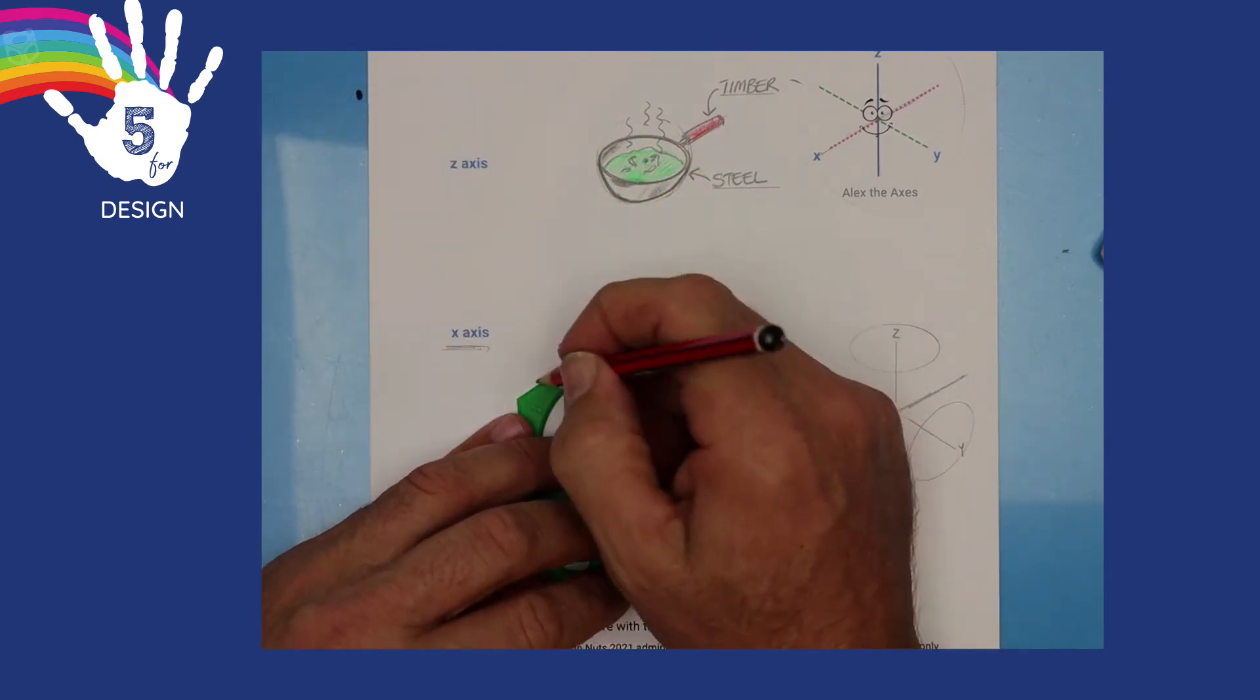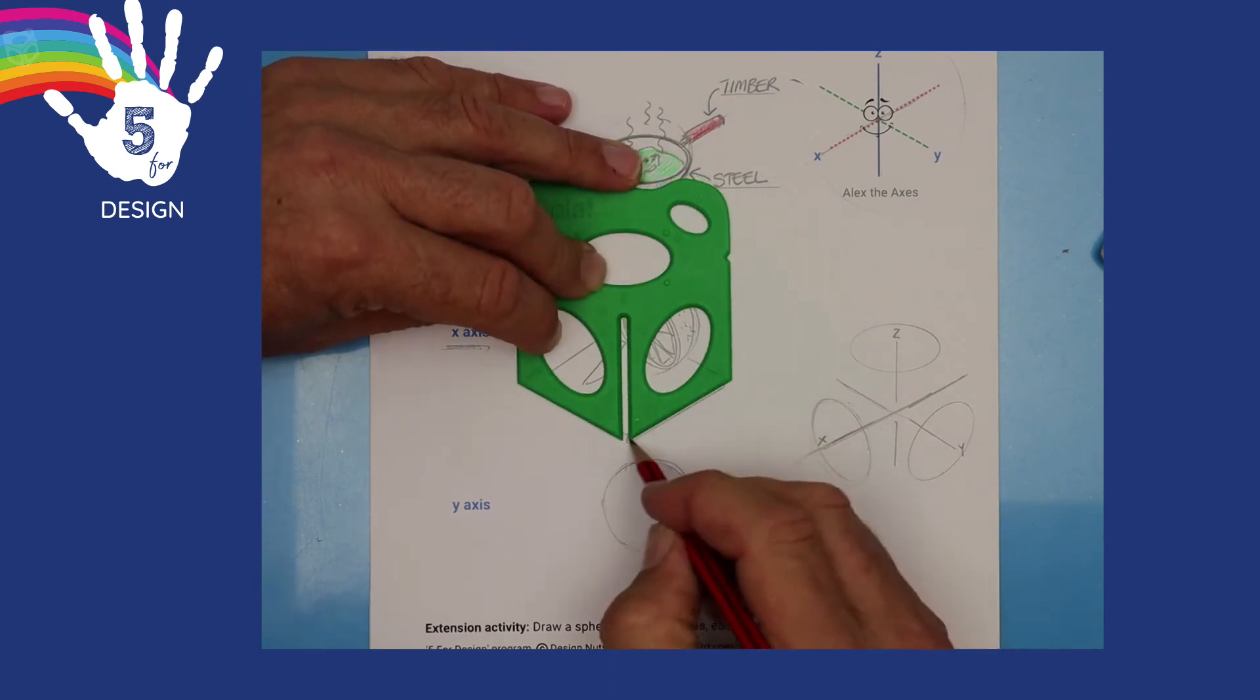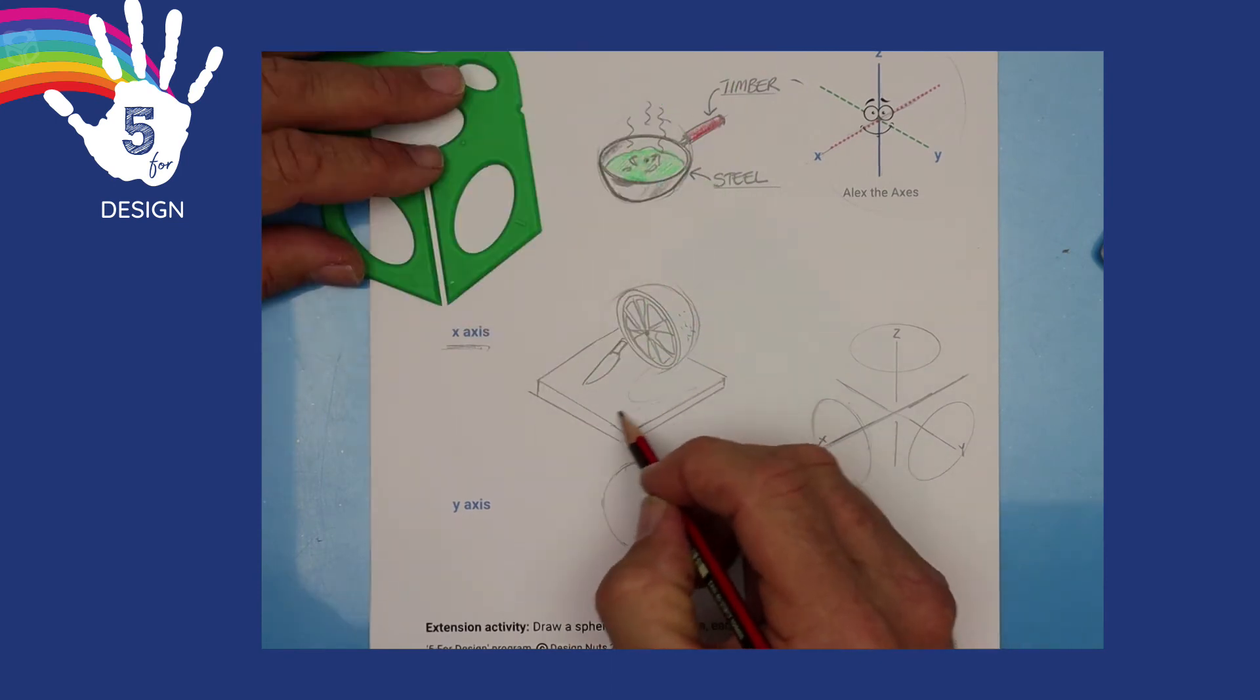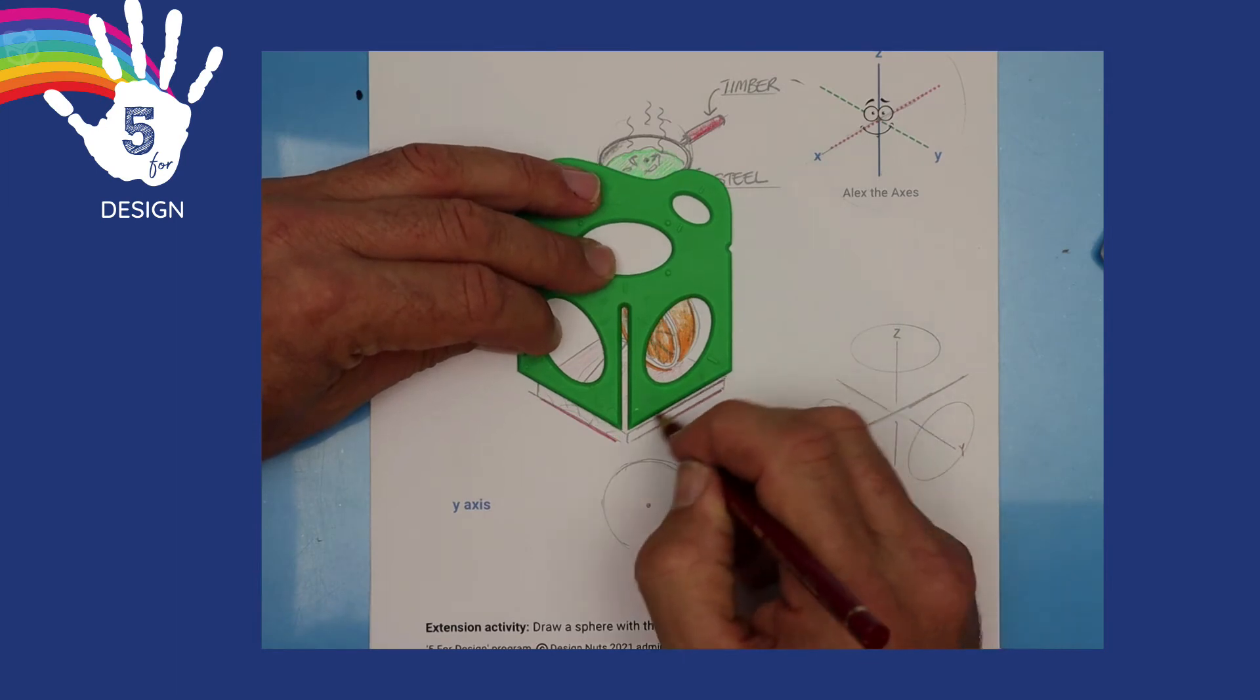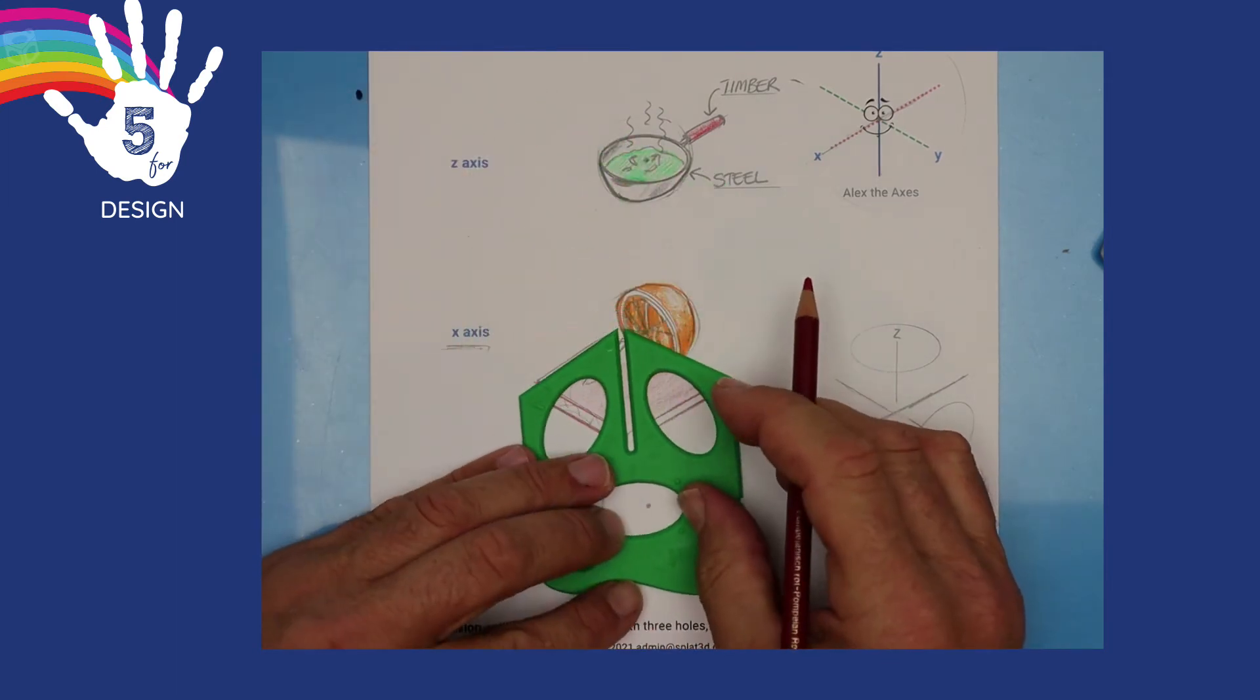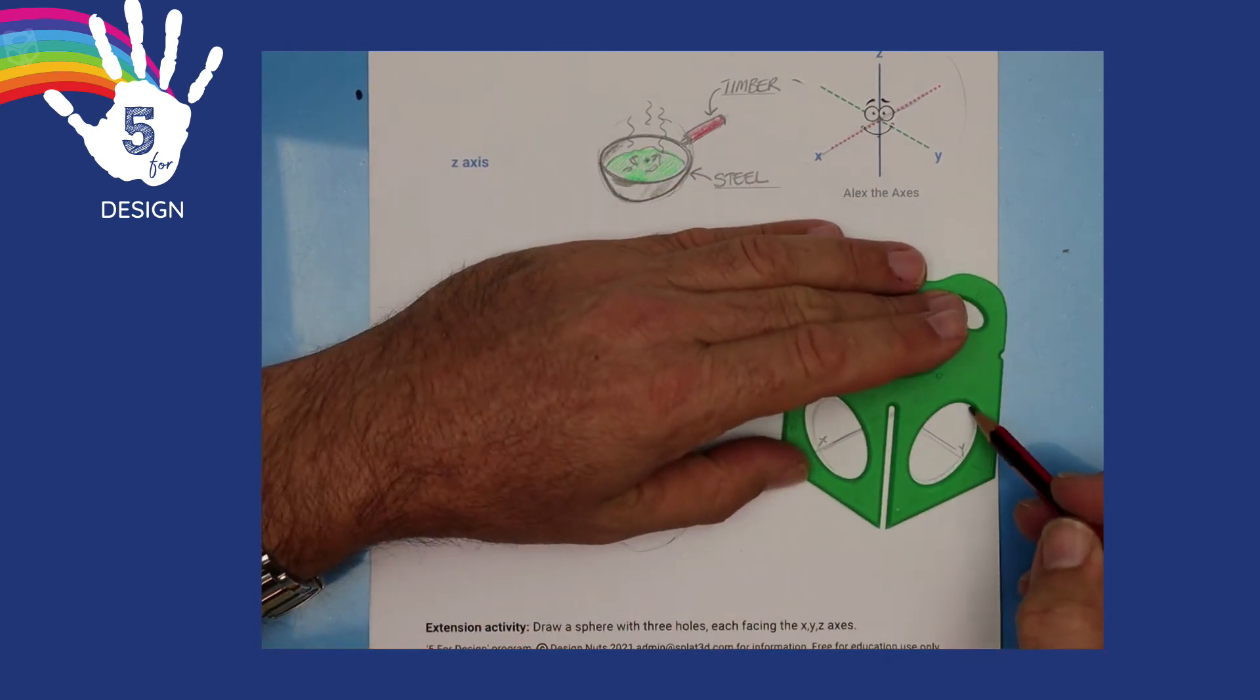Good. And with an isometric square, this could be a chopping board. A little bit of timber grain in there. And some colour shows that it's made from timber and not, for instance, plastic or stone.